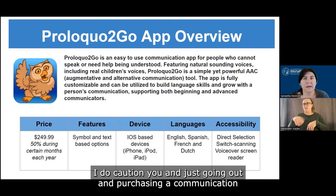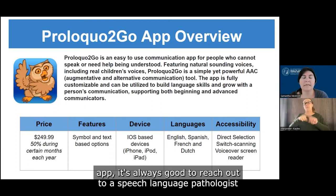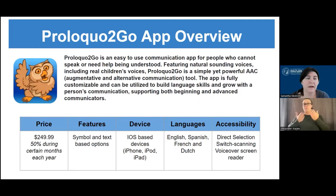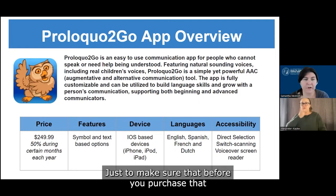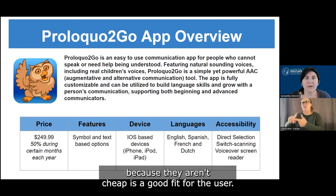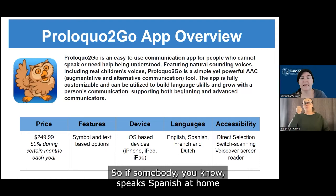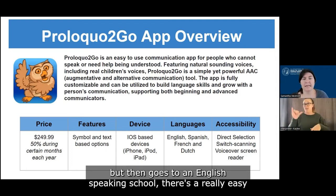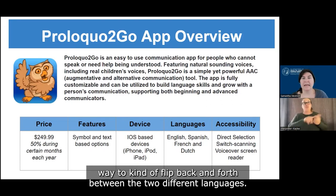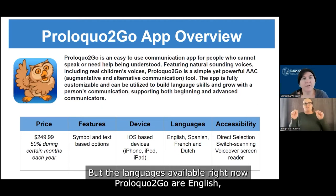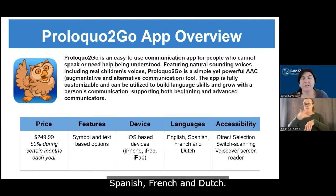I do caution you in just going out and purchasing a communication app. It's always good to reach out to a speech language pathologist to chat about the different features because there are a lot of different choices out there, just to make sure that the app is a good fit for the user before you purchase it because they aren't cheap. It is available in different languages and you can use them in a bilingual way. So if somebody speaks Spanish at home but goes to an English speaking school, there's a really easy way to flip back and forth. The languages available right now for Proloquo2Go are English, Spanish, French, and Dutch.